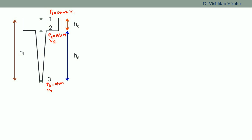We need to apply the continuity equation and Bernoulli's equation in order to get laminar flow of the molten metal and avoid the aspiration effect. The datum is considered at point three itself, so z3 equals zero. The datum head at point two, z2, equals the height of the sprue, hs. The datum head at point one, z1, is the summation of the height of the cup and the height of the sprue, which we call ht, where ht equals hc plus hs.